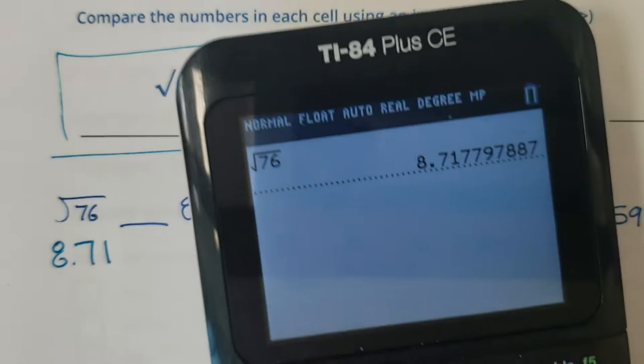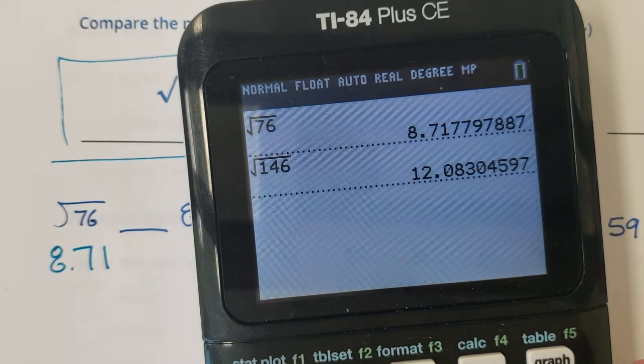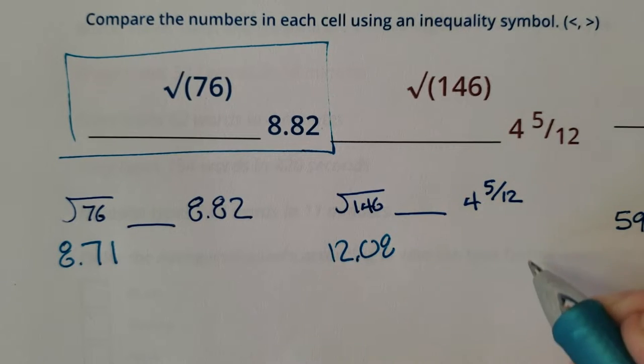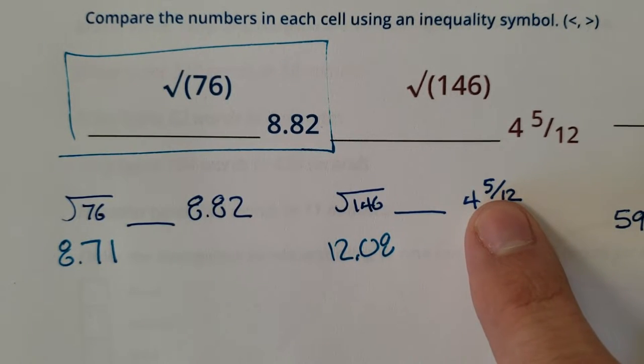Square root of 146 is 12.08. Compared to a mixed number it's 4 and stuff. So I don't even need to change that. Now some of these if they're close you might want to change those to a decimal too.